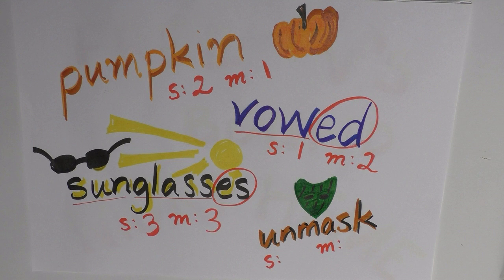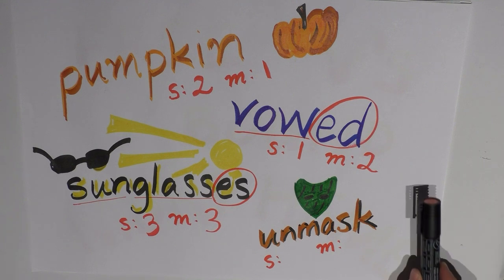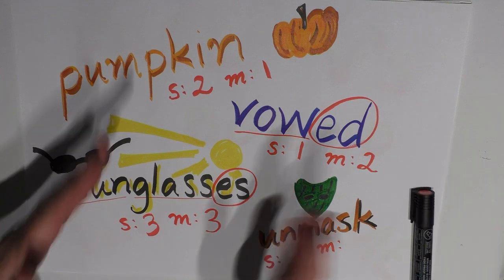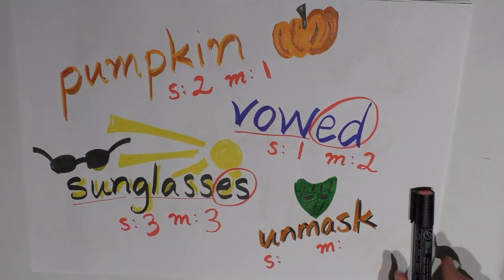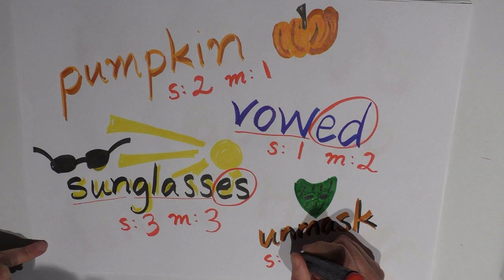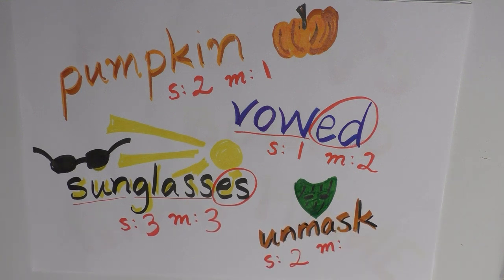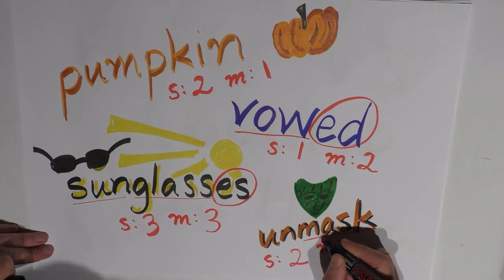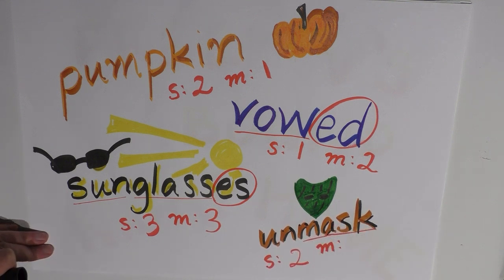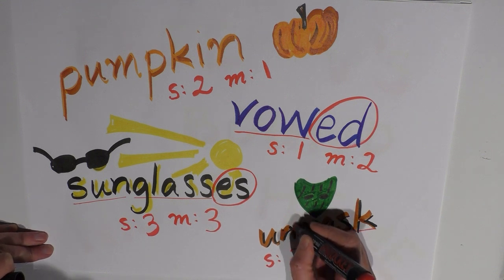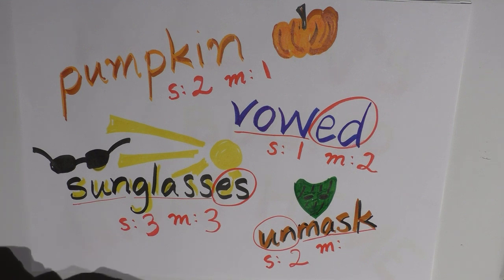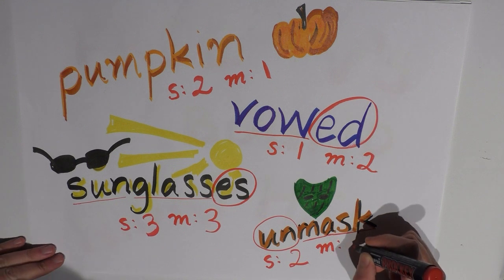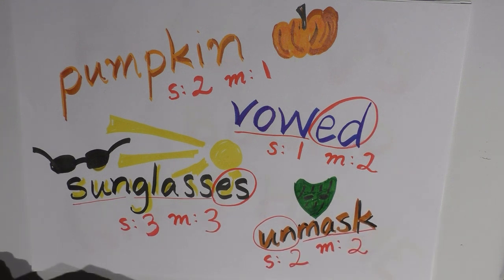Finally, we have the word unmask. Let's first get the syllables — unmask — that's two syllables. And what about the morphemes? We have the main part of the word, which is mask — that's the stem. And on the front this time, not on the back, we have a prefix. Something that gives us, in this situation, the opposite information. So instead of to mask someone, we're unmasking them — uncovering them. It gives us the opposite meaning. Therefore, there are two meaningful morphemes in this word.